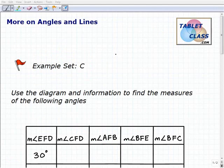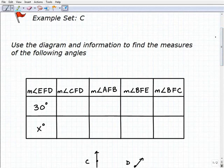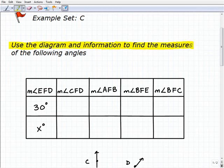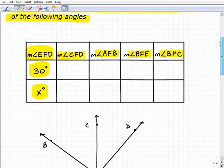Hello, welcome to the video on more on angles and lines. This is our third example set, example set C. What we're going to do here is basically fill in the blanks. We've got a lot of information that we're being asked to find. Let's read the problem, it's always helpful. We're going to use a diagram and some given information to find the measures of all these particular angles.